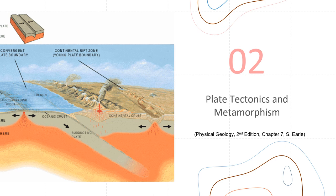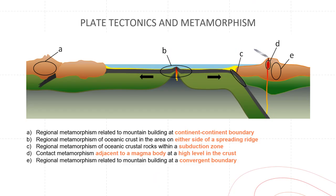Hello everyone and welcome to the second part of the lecture on plate tectonics and metamorphism. In this section we will be looking at five examples: regional metamorphism related to mountain building at a continent-continent boundary; regional metamorphism at the oceanic crust on either side of the spreading ridge; regional metamorphism at a subduction zone; contact metamorphism surrounding a magmatic body; and regional metamorphism related to mountain building at a convergent boundary.